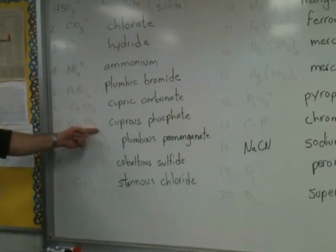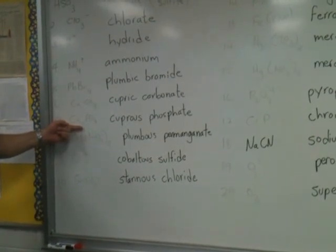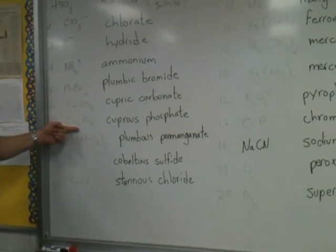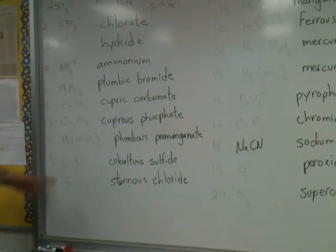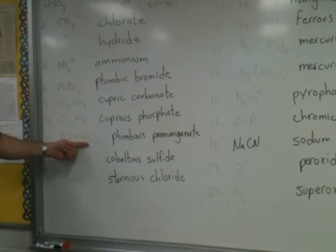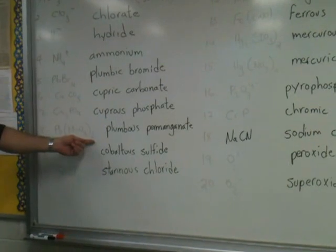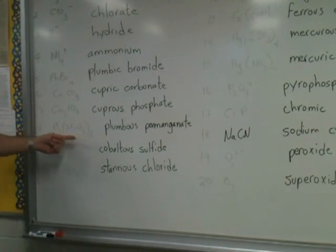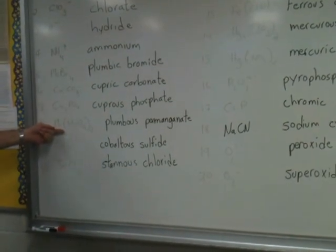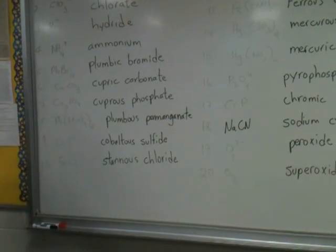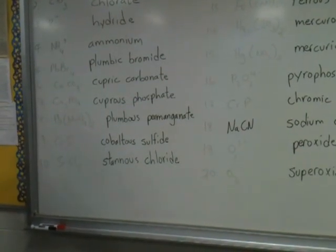Phosphate has a negative three charge, therefore copper must be plus one if there are three copper atoms, so this is called cuprous phosphate. Permanganate has a negative one charge, and there are two permanganate anions, therefore the lead has to be plus two — so it's the lower charged species. Plumbous permanganate is what we call that, according to the old system.